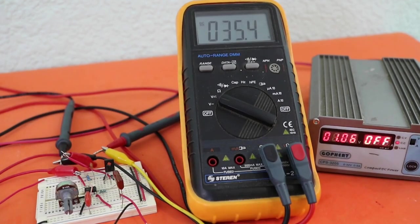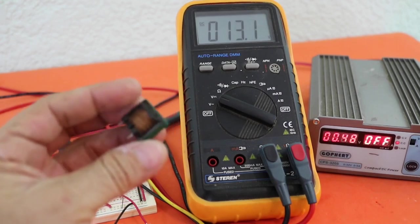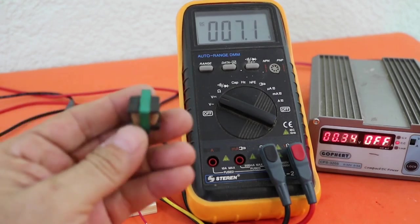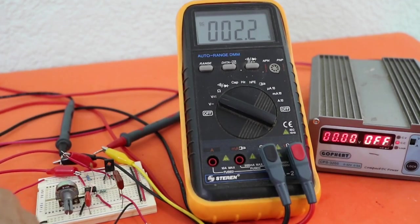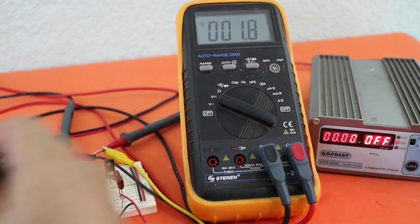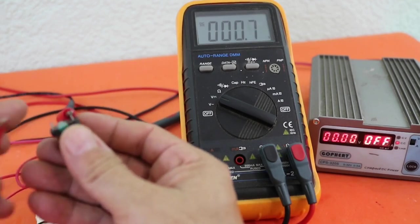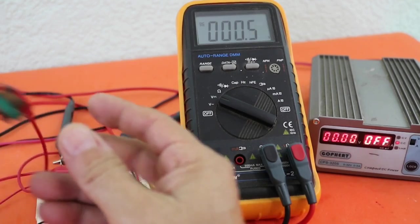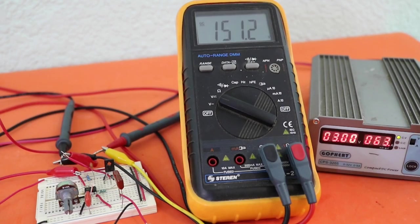And finally, I'm going to use this other inductor from a CFL lamp. This should have more than 100 turns. So the voltage must be even higher. I'm going to connect and let's see. We get 151 volts at the output.